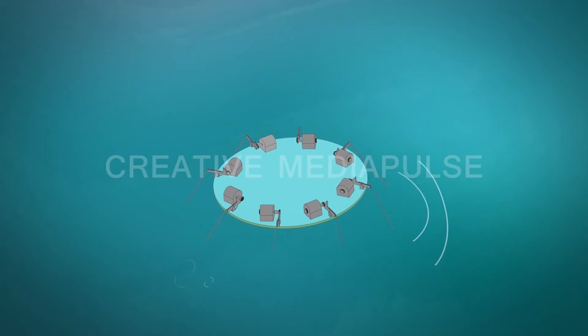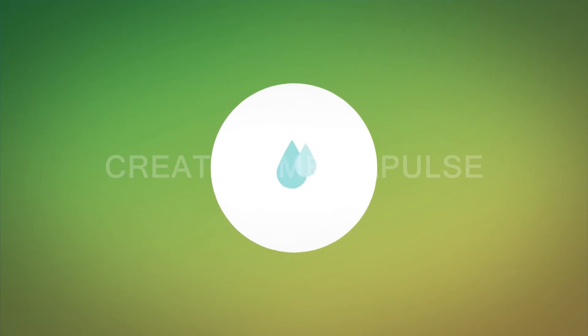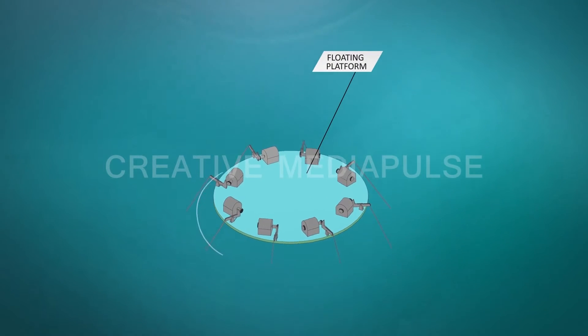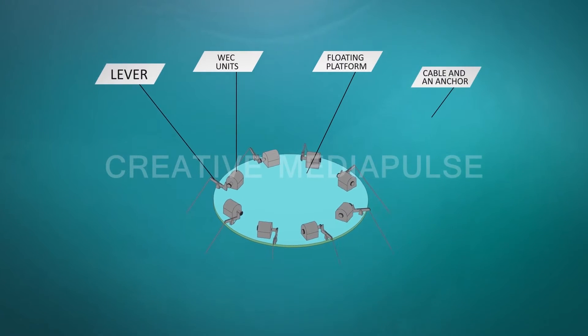Through this unique invention called energy conversion system for ocean waves, we can harvest ocean wave energy and convert it into electricity very cost effectively. This system consists of a floating platform, wave energy capturing units, lever, cable, and an anchor.